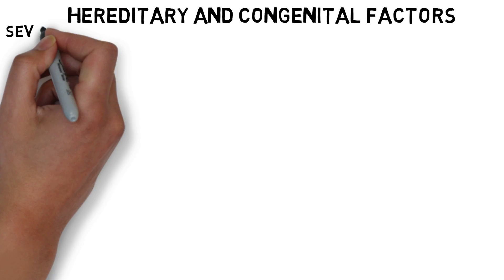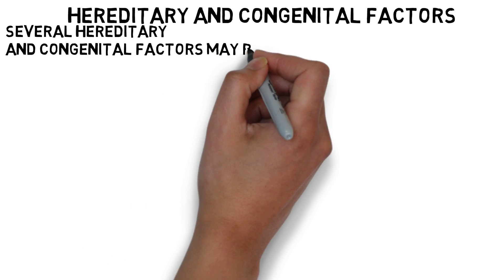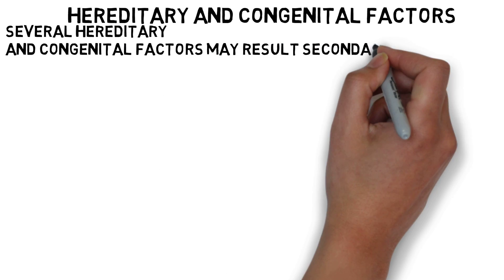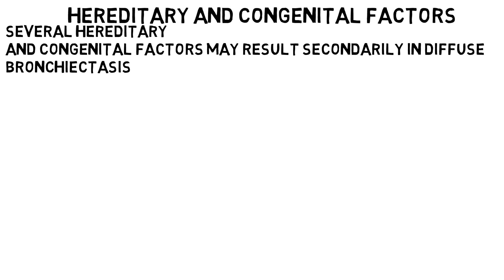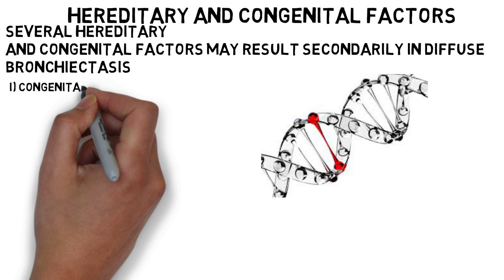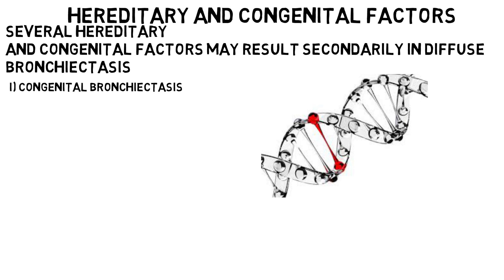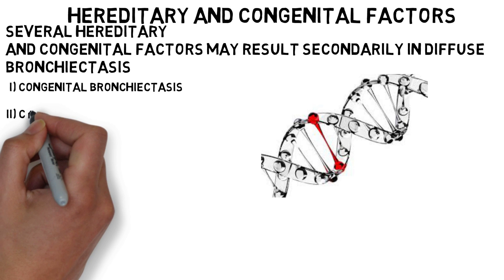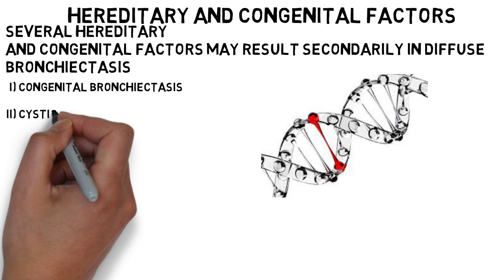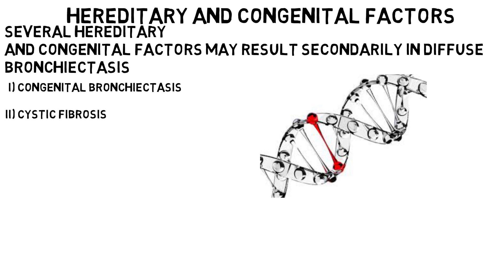Hereditary and congenital factors: several hereditary and congenital factors may result in diffuse bronchiectasis. Congenital bronchiectasis is caused by developmental defects of the bronchial system. Cystic fibrosis is a generalized defect of exocrine glands; its secretions result in obstruction, infection and bronchiectasis.